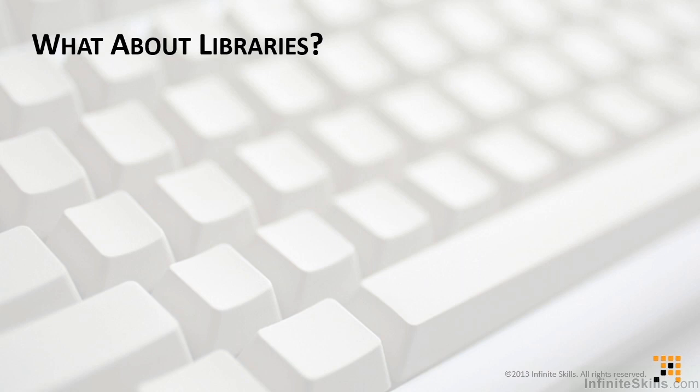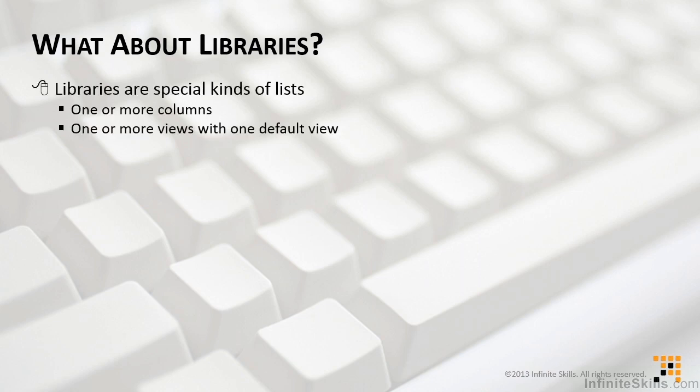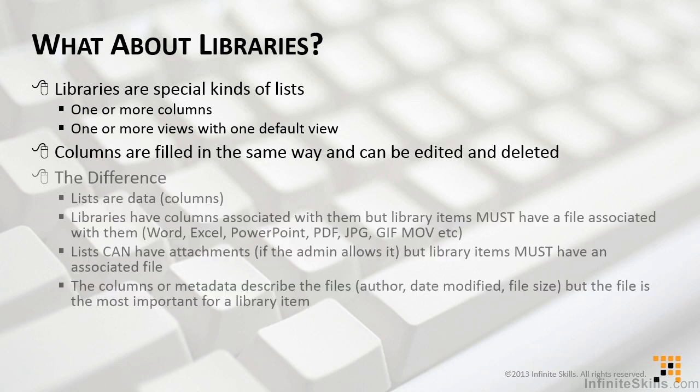In part one, we talked a lot about lists. We now understand that they're pretty straightforward. Libraries are pretty easy, too, because libraries are just special kinds of lists. They also have one or more columns, and one or more views with one default view. In this regard, they are exactly the same.